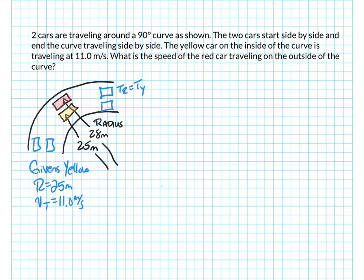Well, what do I have for the red car? Let's see. Givens for the red car, I know its radius is going to be 28 meters, and I know that its velocity is unknown. But I know this fact, I know that the time of the yellow car is equal to the time of the red car. So if I can find the time of the yellow car, I can then find the time of the red car, and then I can find the speed, because the time of the yellow and the time of the red are the same. So that's the fact I'm going to use.